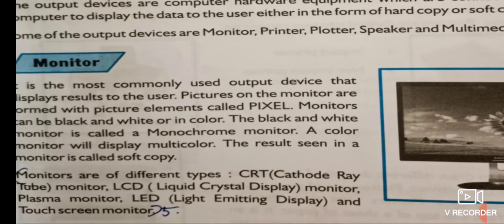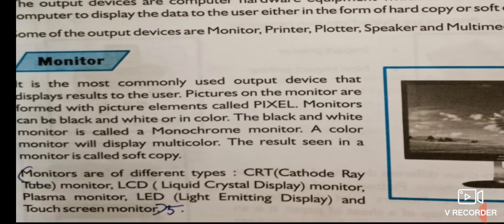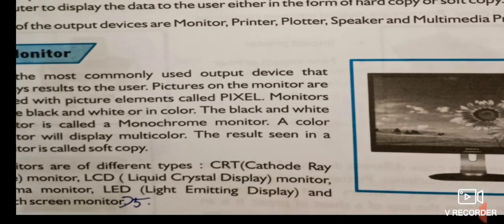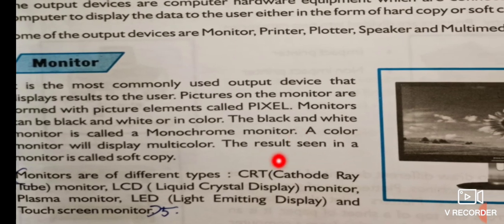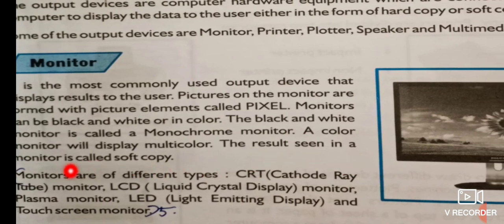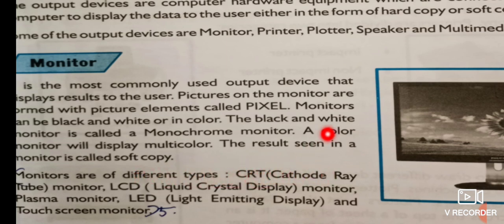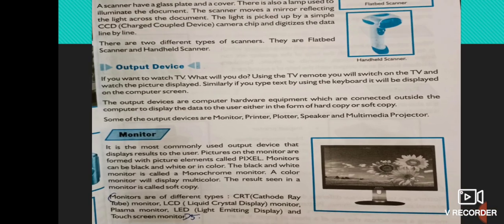Monitors are also of different types. The first type is CRT — Cathode Ray Tube monitor. The second is LCD — Liquid Crystal Display monitor. And the third is LED — Light Emitting Display. These are the different types of monitor.